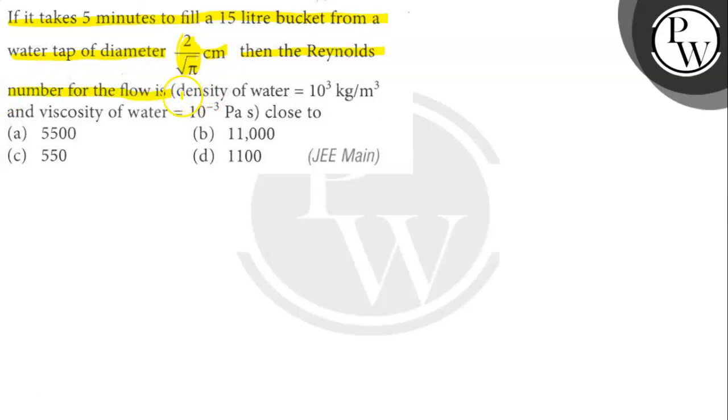So here the density of water is given as 10³ kg/m³ and viscosity of water is 10⁻³ pascal second.